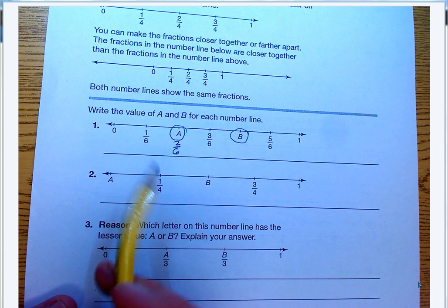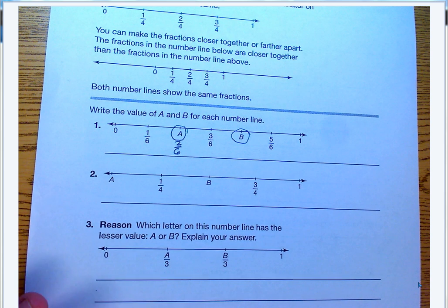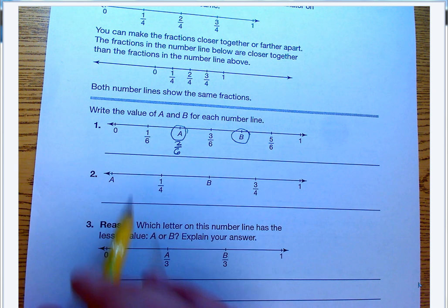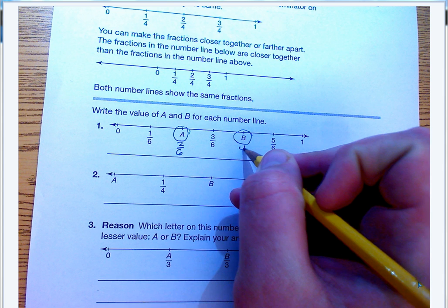And what about B? Now I have one-sixth, two-sixths, three-sixths. What do you think B is going to be? Make sure you talk nice and loud, Zara. B is four-sixths. Let's go ahead and take a look. One, two, three, four-sixths. That's right. Good job, Zara.